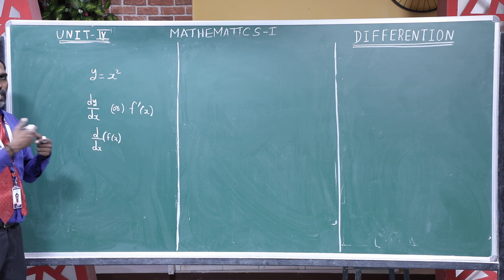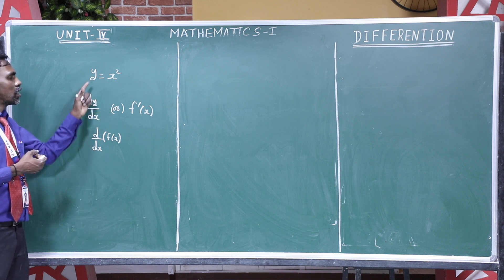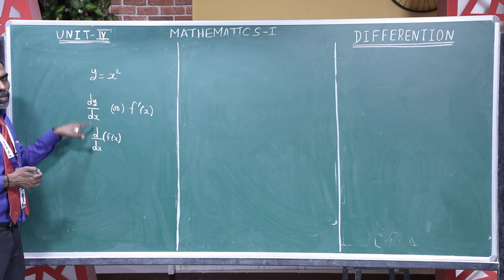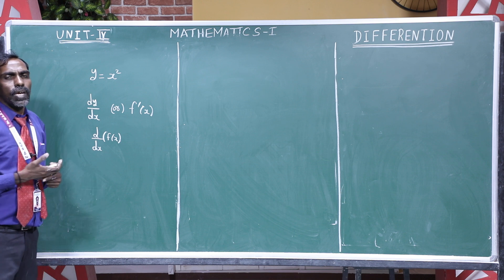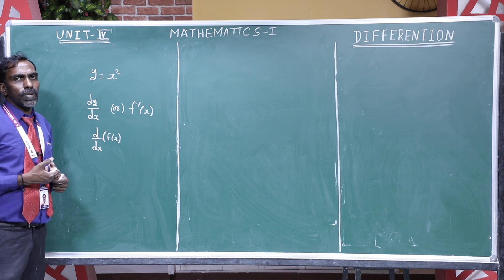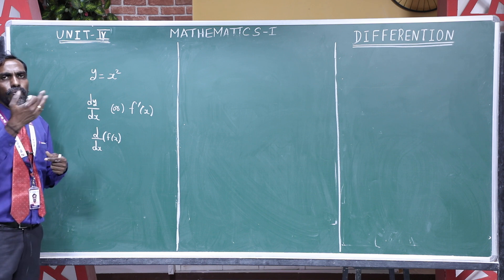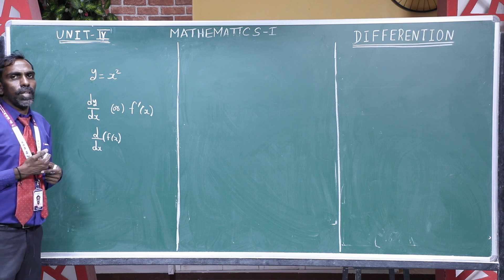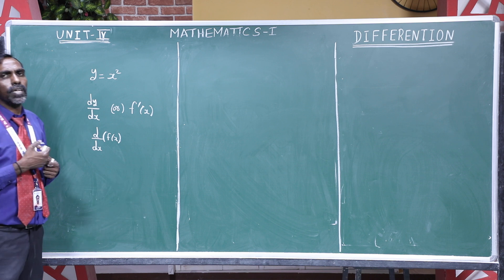If you understand the basic concept, you differentiate the x variable with respect to x. There are so many applications in engineering. For example, if you find out the velocity of a car — if you are traveling a distance of 5 kilometers — you differentiate with respect to time.